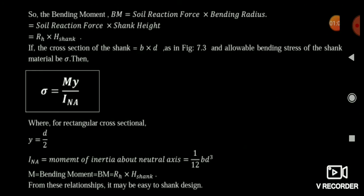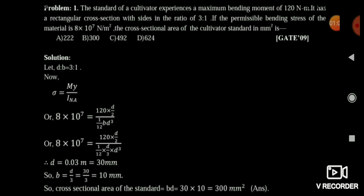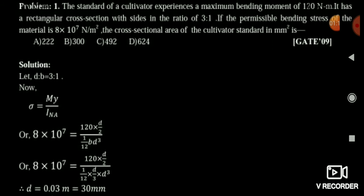For a rectangular cross section the area is B × D. Now see the question: a standard cultivator experiences a maximum bending moment of 120 Nm and has a rectangular cross section with a side ratio of 3:1. The permissible stress is 5.8 × 10⁷ N/m². Find the cross-sectional area.